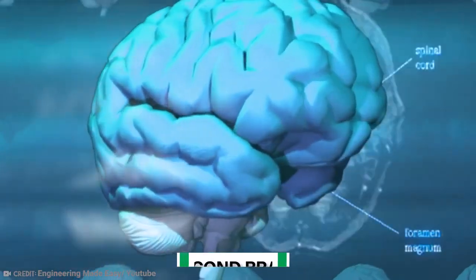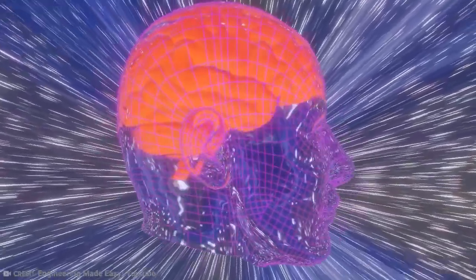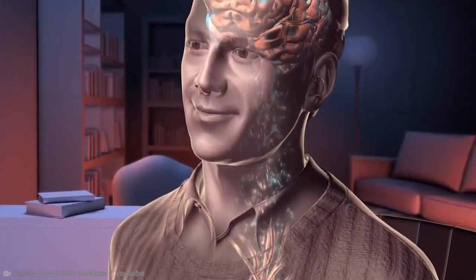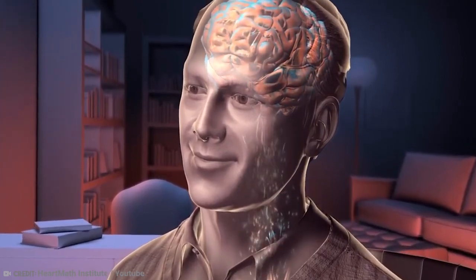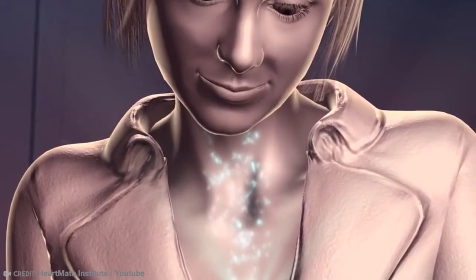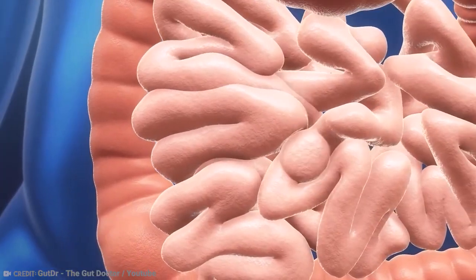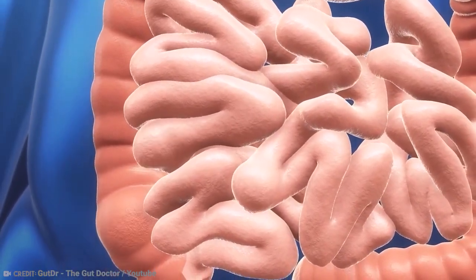This second brain is so robust that it can continue to function even when the primary neural connection between your gastrointestinal system and the brain, called the vagus nerve, is severed. In other words, even if your brain and the gut couldn't communicate, neurons in your gut wall would still be able to provide the signals required for your digestive system to work properly on its own.